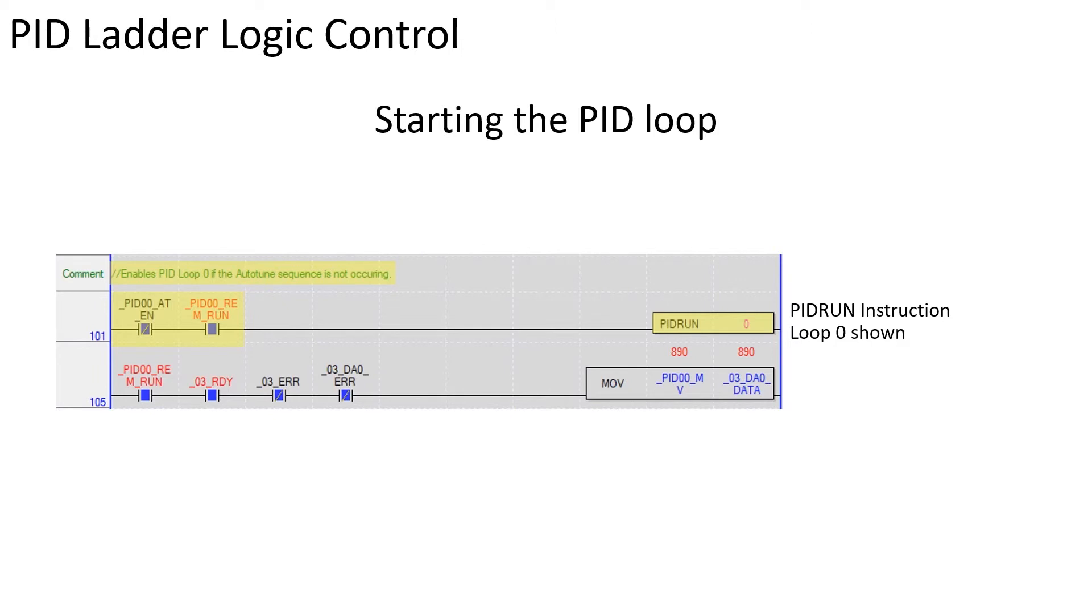The zero in the instruction box denotes the loop number. If the PID remote run bit is on and the analog output module is functioning properly, the PID MV value is sent to the analog output module channel.